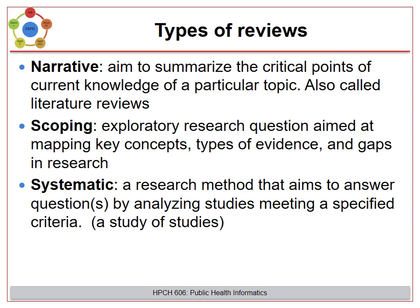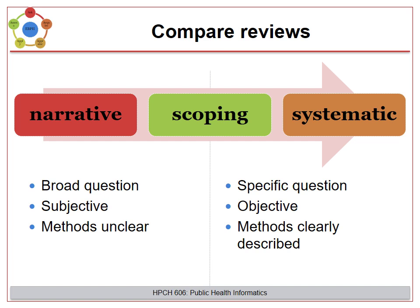In between these two types is the scoping review. It has a broad question, like a narrative review, but it also has a set of methods that you follow and describe to your reader, which is more similar to a systematic review. When comparing reviews, narrative reviews tend to have a broad question, be very subjective, and provide little information on the methods, while systematic reviews focus on a specific question, should be very objective, and have methods clearly and appropriately described.